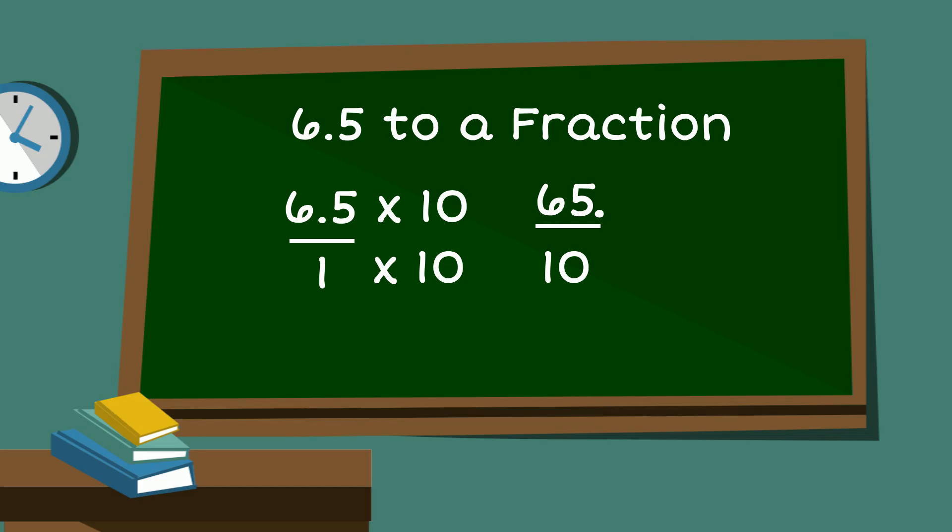I know I can simplify this, and since it ends with a 5, I know it's divisible by 5. 5 goes into 65 13 times, and 5 goes into 10 2 times. So that gives us 13 over 2, and that is simplified.